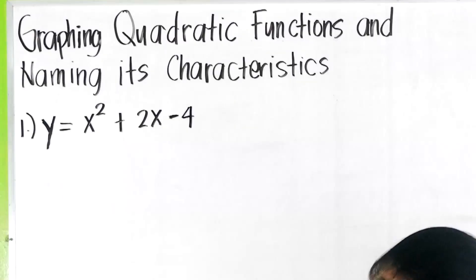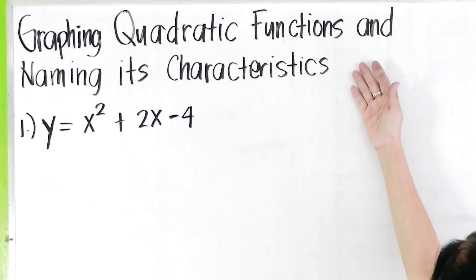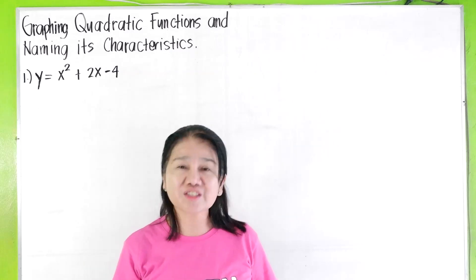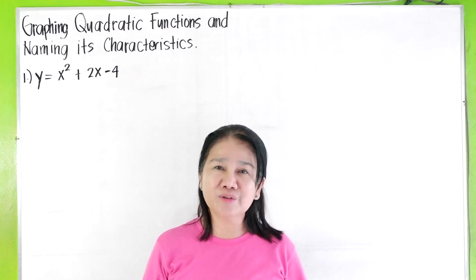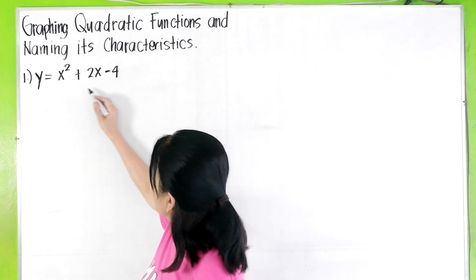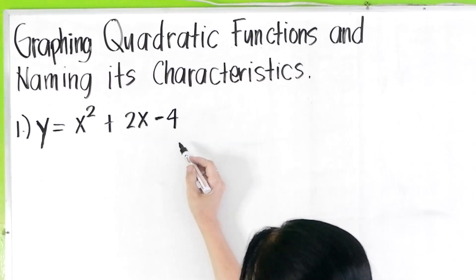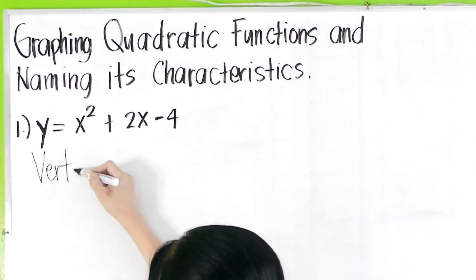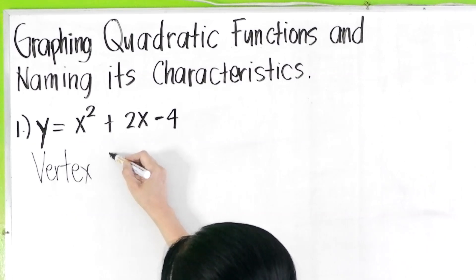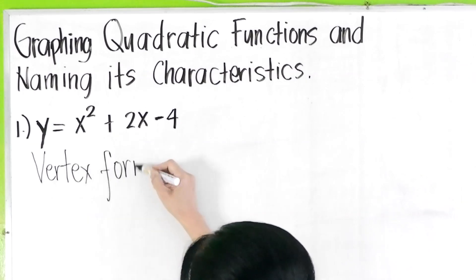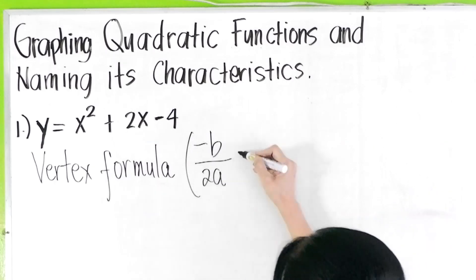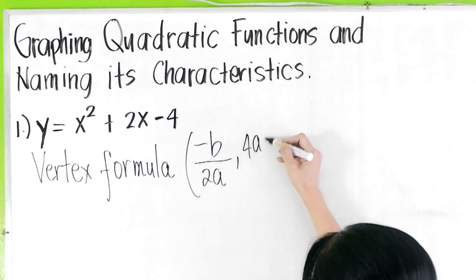Today's lesson is graphing quadratic functions and naming its characteristics. There are actually different ways of graphing a quadratic function, but today I'm going to show you the shortest one. When you're given this quadratic function, y = x² + 2x - 4, you can use the vertex formula to find the vertex. The vertex formula is -b/2a and (4ac - b²)/4a.